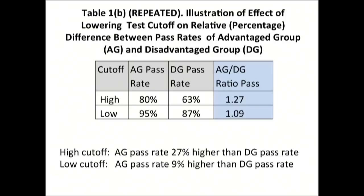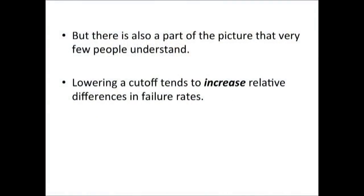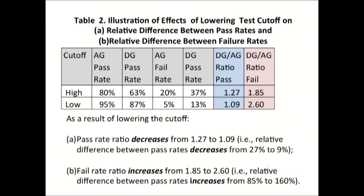But there's also a part of the picture that virtually no one understands: lowering a cutoff tends to increase relative differences in failure rates. Adding failure rates to the illustration — the penultimate column shows how lowering the cutoff reduces the relative difference in pass rates, but the red highlighted column shows how lowering the cutoff increased the relative difference in failure rates. The ratio of the disadvantaged group's failure rate to the advantaged group's failure rate was initially 1.85; now it's 2.60.